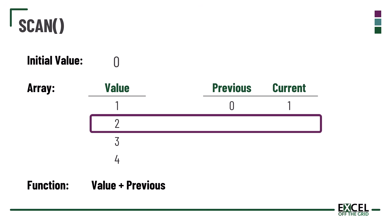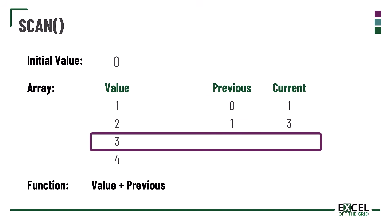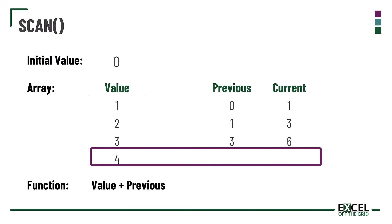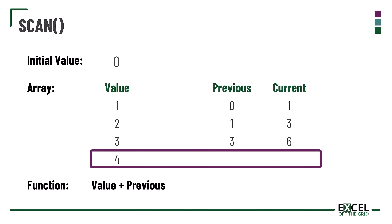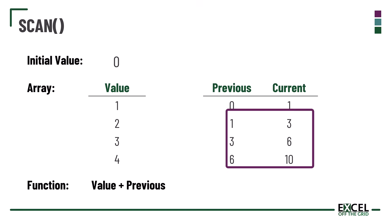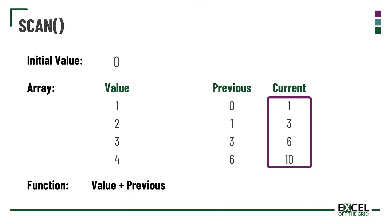We then move to the second value, which is 2. The previous result was 1, so 2 plus 1 equals 3. Next, the value is 3 and the previous result was 3, so 3 plus 3 equals 6. Finally, the last value is 4 and the previous result was 6, so 4 plus 6 equals 10. The SCAN function returns 1, 3, 6, and 10 as the result in a single array.